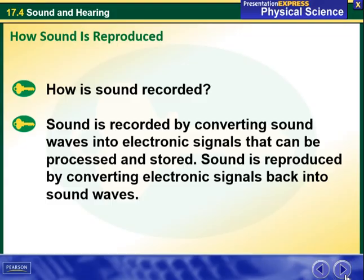How is sound recorded? Sound is recorded by converting sound waves into electronic signals that can be processed and stored. Sound is reproduced by converting electronic signals back into sound waves.